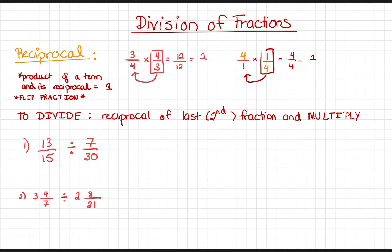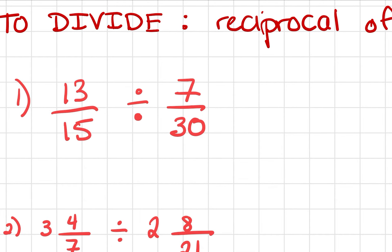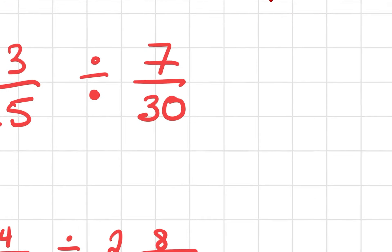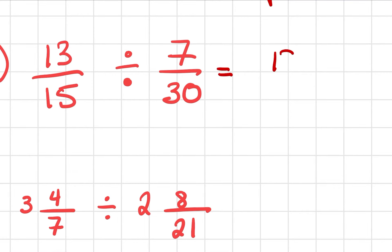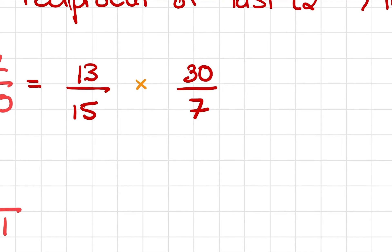So for number one here, I have 13 over 15 divided by 7 over 30. We don't care about common denominators. So we're essentially just going to flip the second fraction and multiply. The first fraction stays the same, but we change our 7 over 30 to 30 over 7. Now we can go ahead and multiply — same rules as before: multiply across the top, multiply across the bottom — and we get 390 over 105.